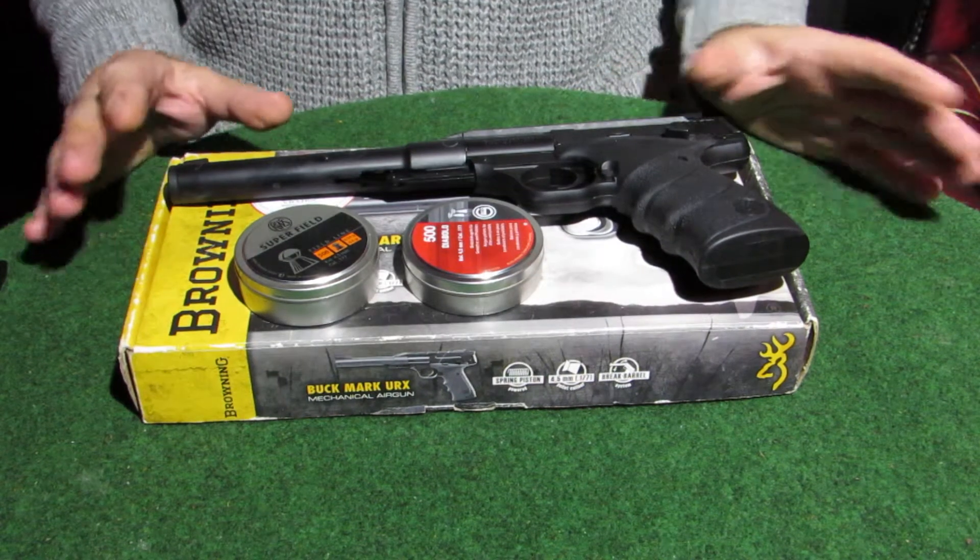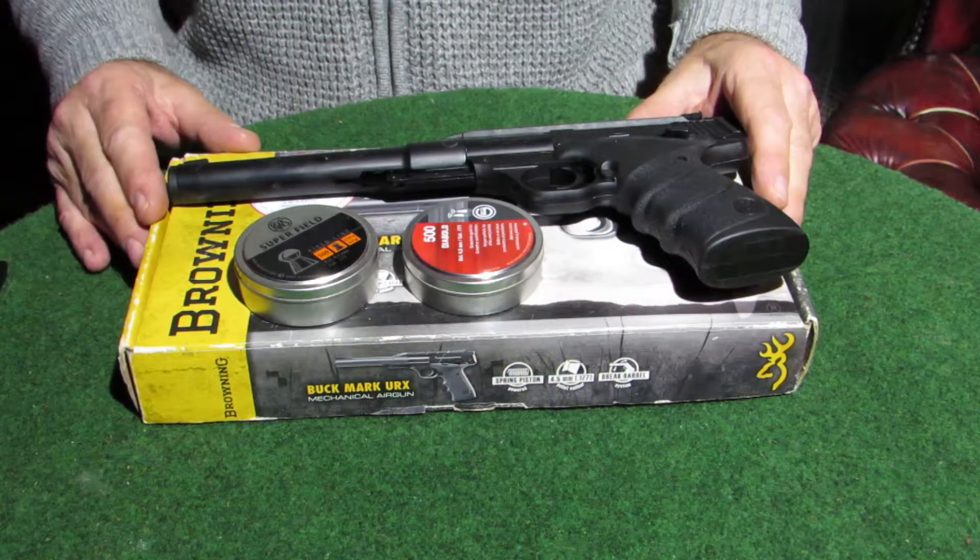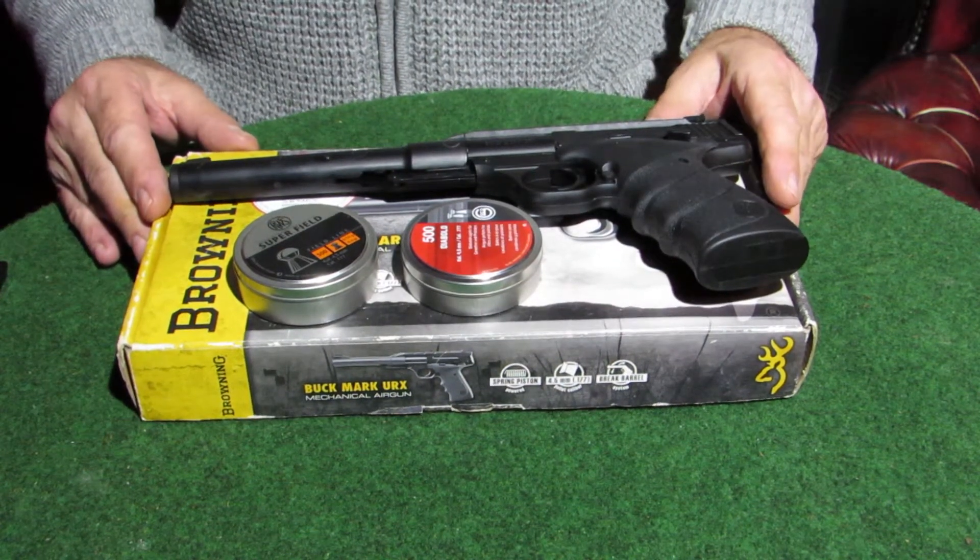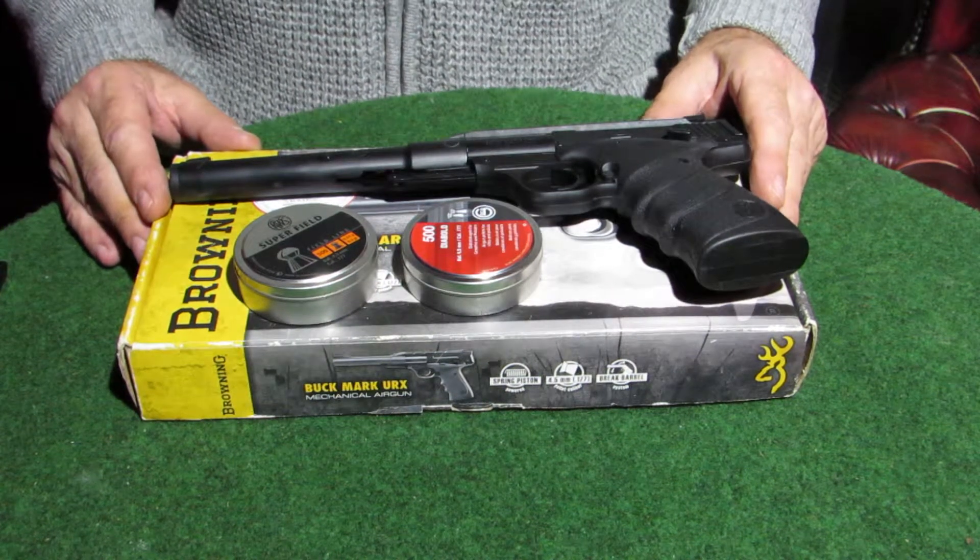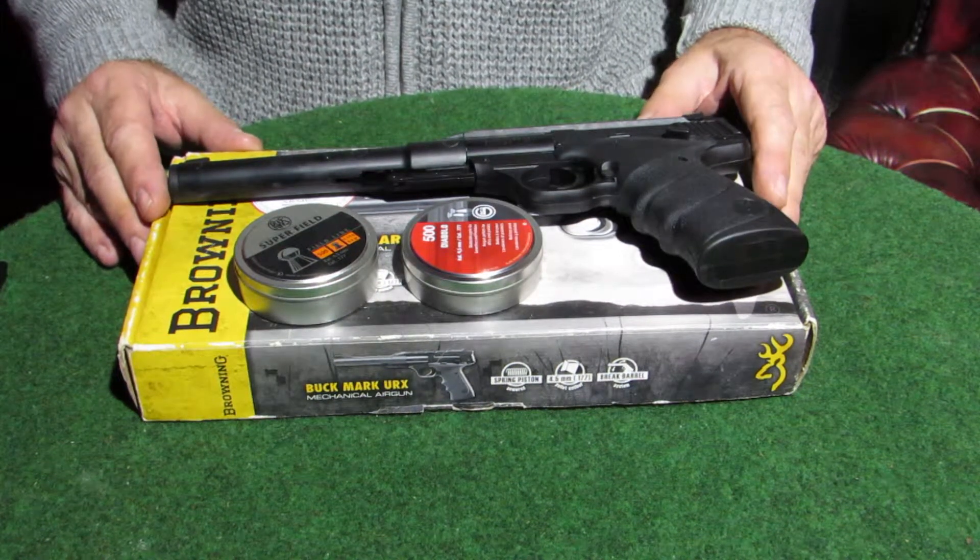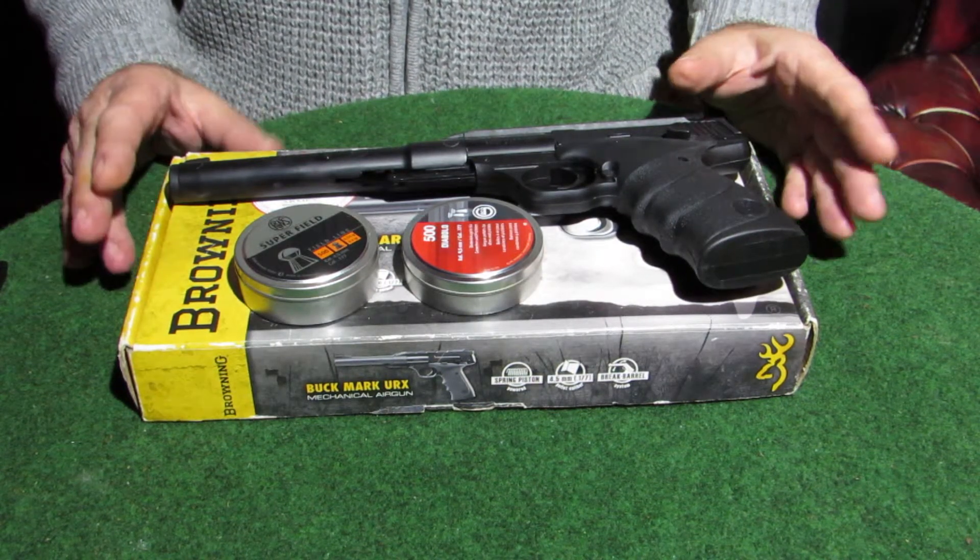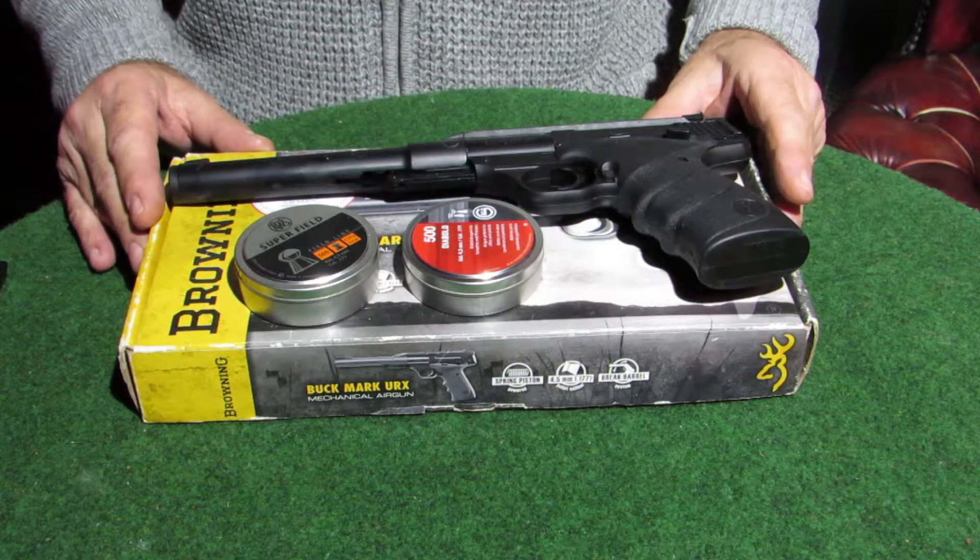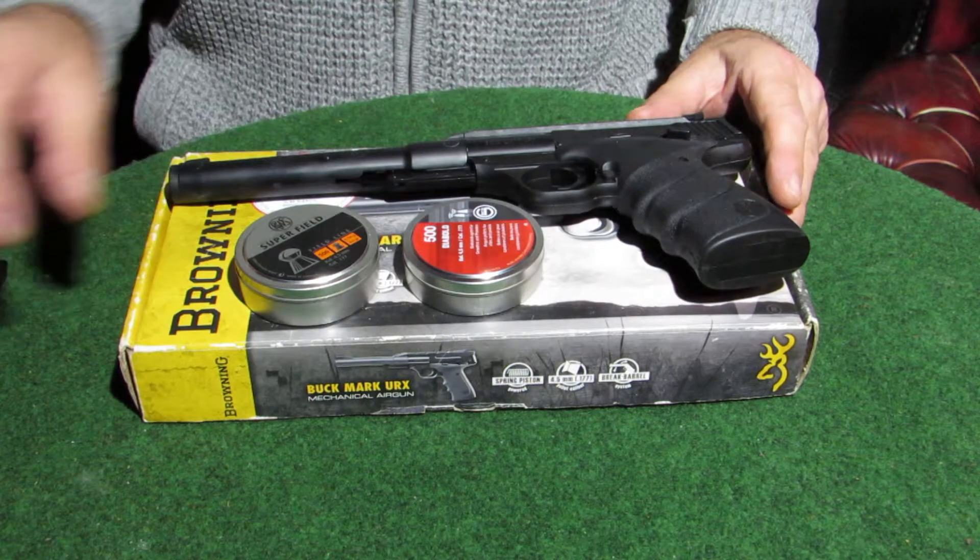In the previous video we showed stripped down some minor improvements and at the time we didn't have a chronograph but now we do. One of our legion of fans has asked a question asking what is the power output of it in joules. And being in the UK we measure things in foot pounds so I gather it's an overseas viewer or whatever outside the UK. So what I'm going to do, we're going to give a power test with two different pellet weights.